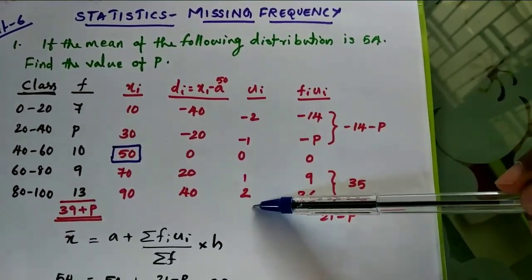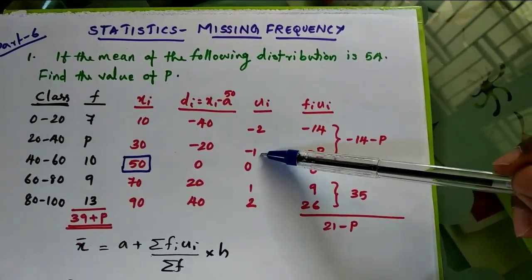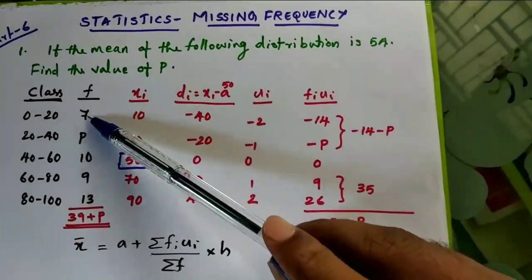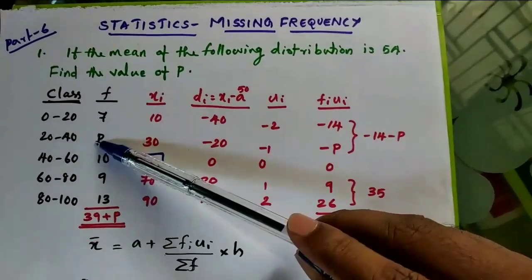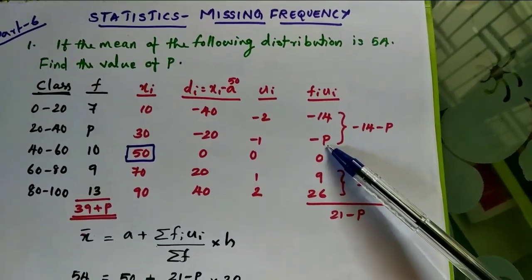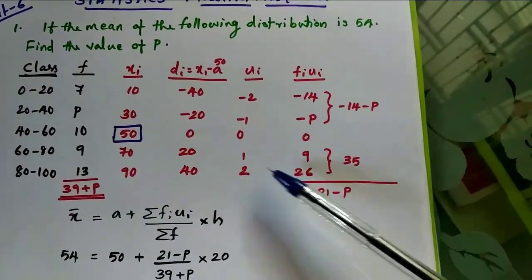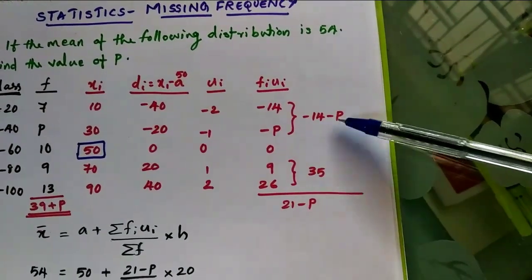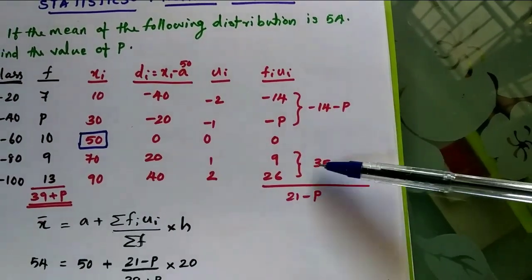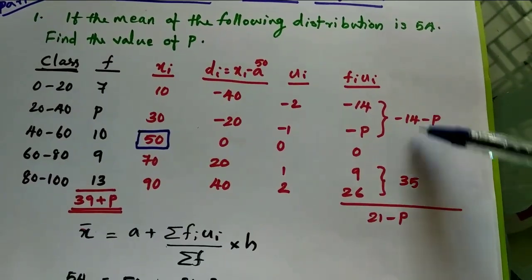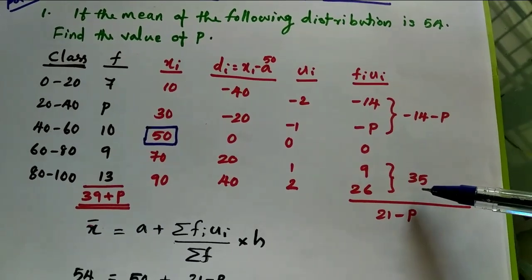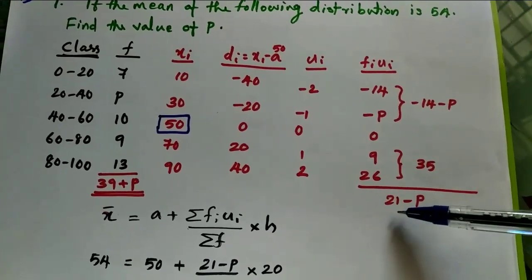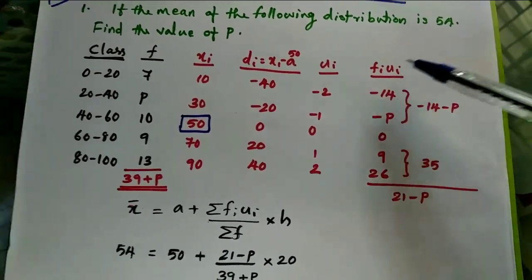Completing the ui column: above the assumed mean we get 0, and below we get minus 1, minus 2; above we get plus 1 and plus 2. For the fi·ui column: 7 into minus 2 is minus 14; p into minus 1 is minus p; 9 into 1 is 9; 13 into 2 is 26. Adding the negatives: minus 14 minus p; adding the positives: 9 plus 26 equals 21. So sigma(fi·ui) equals 21 minus p.